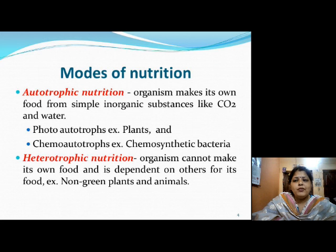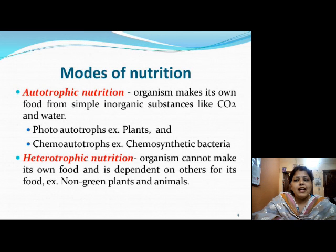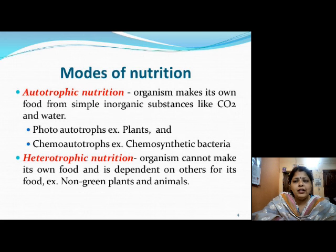Autotrophic nutrition is of two types: photo-autotrophs and chemo-autotrophs. Everybody is familiar with photo-autotrophs, because we always give the example of plants. Plants utilize sunlight, so they are known as photo-autotrophs, as they synthesize food with the help of sunlight and chlorophyll, converting carbon dioxide and water to glucose and oxygen. Chemo-autotrophs are chemosynthetic bacteria which utilize chemical energy and make food from chemical substances.